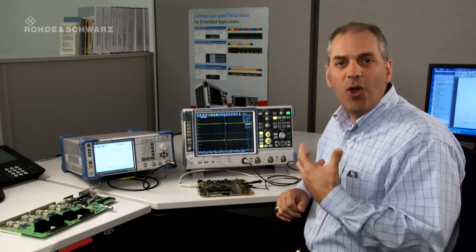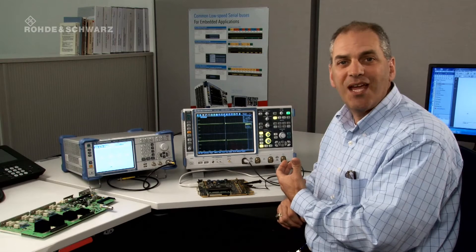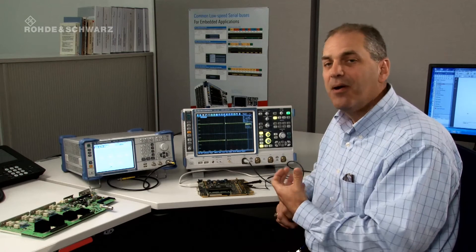The Rohde & Schwarz scopes feature an ASIC that performs all of the display processing and waveform mask testing in real-time digital hardware so that the update rate remains very fast, in this case about 600,000 waveforms per second, even while mask testing is being performed, making the update rate not just a nice, fast number, but also a very useful tool for finding these errors.